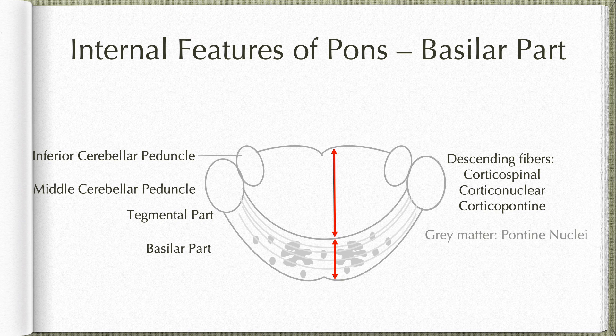The corticopontine fibers relay in the collection of gray matter in the basilar part, which are known as pontine nuclei. These pontine nuclei are discrete collections of about 20 million neurons and form the precerebellar nuclei. In fact, these are the only precerebellar nuclei located in the basal part of the brain stem, whereas all other precerebellar nuclei are located in the tegmental part.